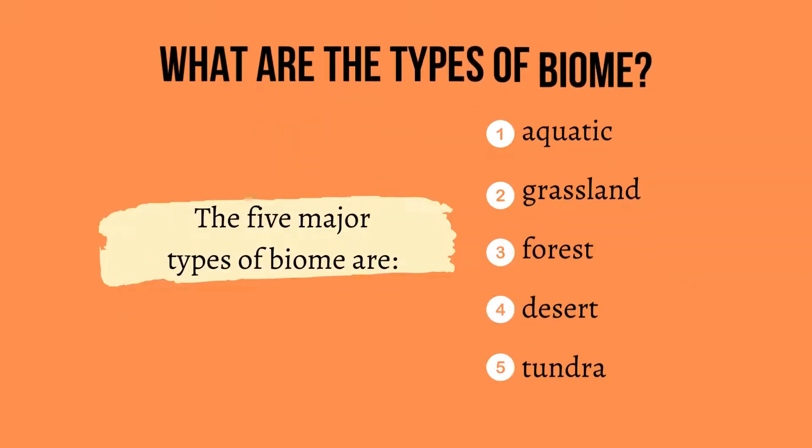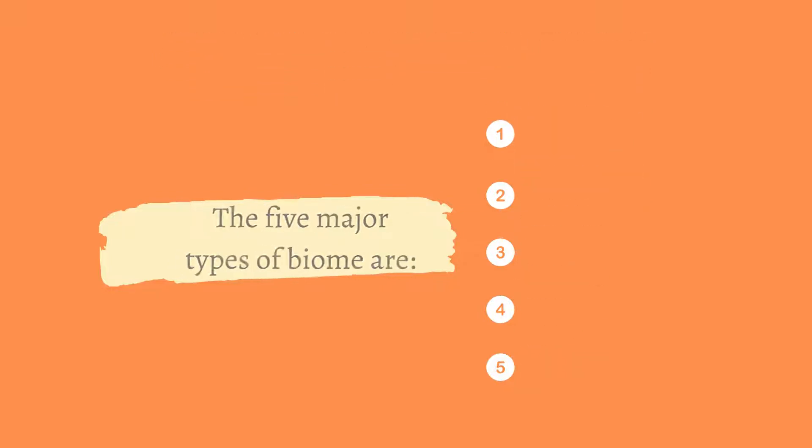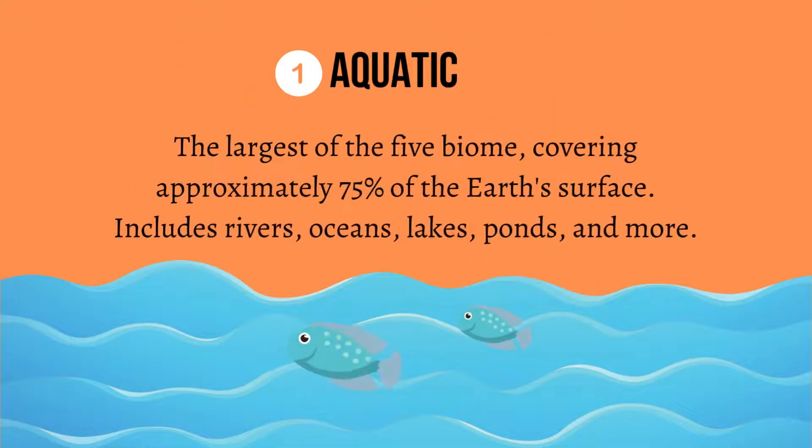What are the types of biome? The five major types of biome are aquatic, grassland, forest, desert, and tundra.